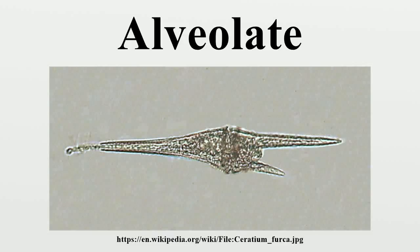The alveolates is one of the major groups of protists, considered a clade and a superphylum of eukarya called alveolata. Within alveolata, there are around nine major and minor phyla, which are very diverse in form, but are now known to be related on various ultra-structural and genetic similarities.